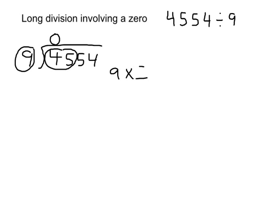In this case, it is 5. So our 5 goes up on top, right next to the 0 in the 100s column. And 9 times 5 is 45. And now the next step, we subtract it. And 45 minus 45 is 0.